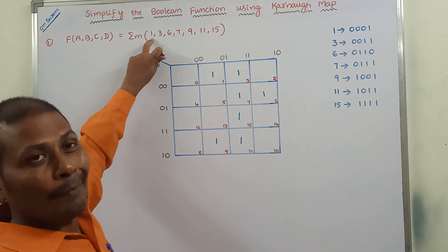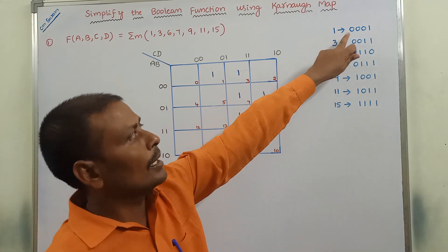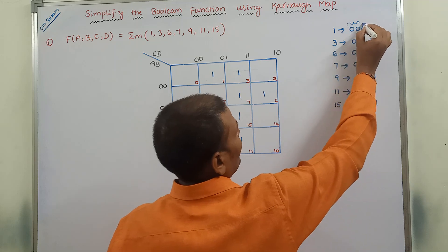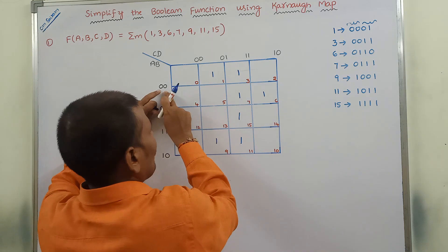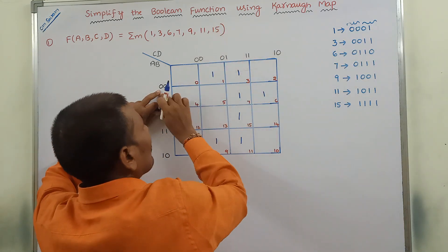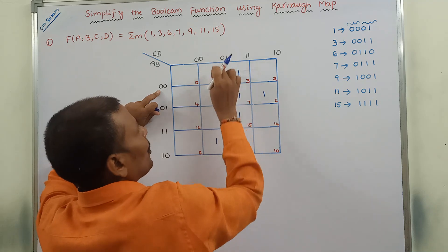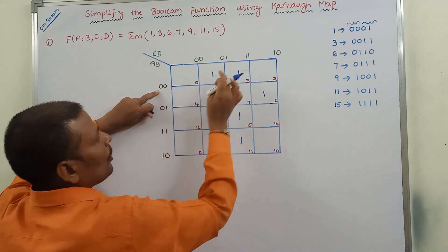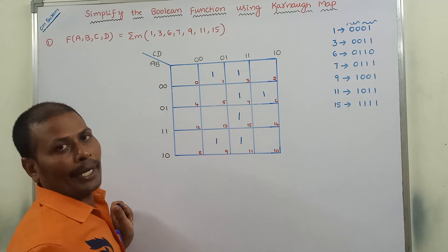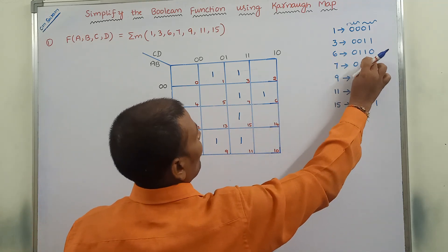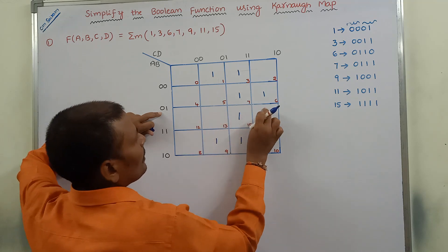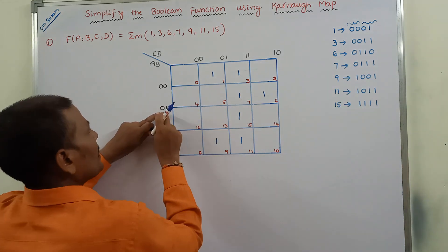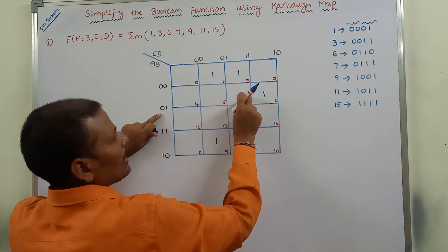Another way: min term 1 in binary form is 0001. The first two digits represent the row and the last two represent the column. So row 00, column 01 — place 1. Min term 3 is 0011: row 00, column 11 — place 1. Min term 7 is 0111: row 01, column 11 — place 1.